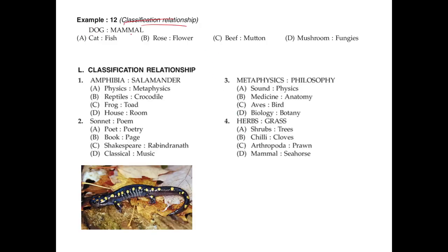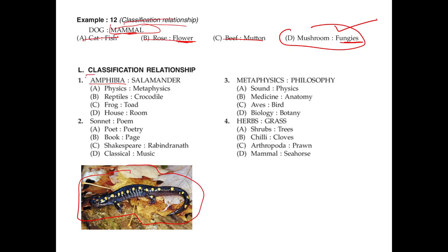For example, a dog is a mammal because it has furry hair. Rose and flower has no classification — flower is not a classification name; mammal is. Mushroom is part of fungus — fungus is a classification of different types of mushrooms. Amphibia and salamander: amphibians are animals that live both on land and in water, and a salamander is a species that looks like a lizard. Classification goes on the left side and the specific animal on the right.